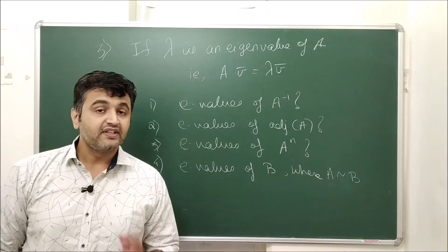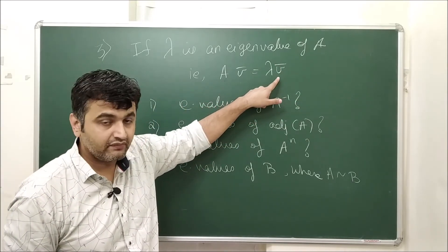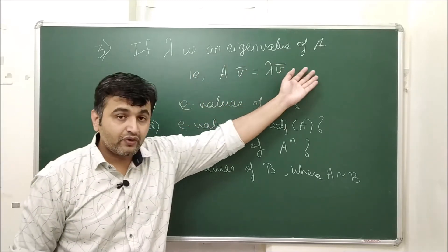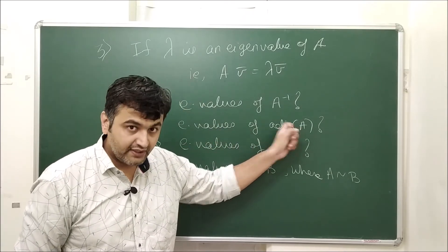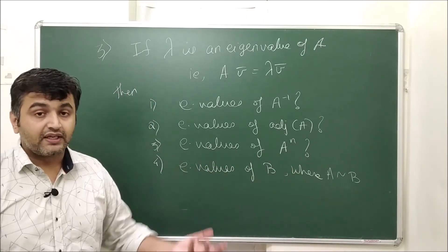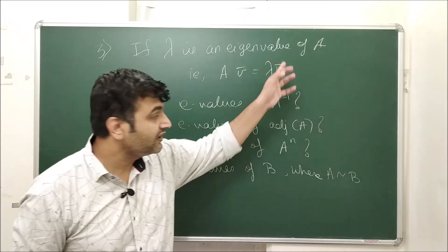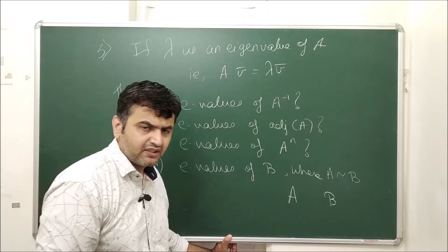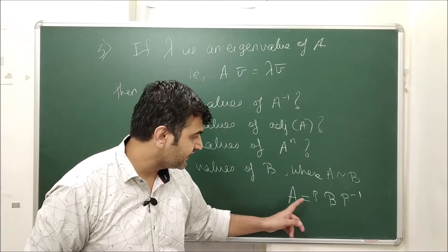The third area of properties: if λ is an eigenvalue of A — meaning Av = λv for some nonzero eigenvector v — one can ask: what are the eigenvalues of A inverse? Of the adjoint of A? Of A², A³, A⁴, and so on? Also, if B is similar to A — meaning there exists an invertible matrix P such that B = P⁻¹AP — what are B's eigenvalues?